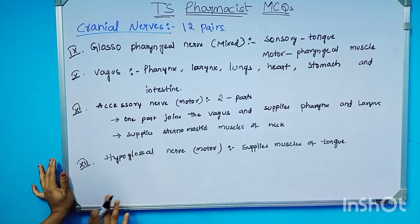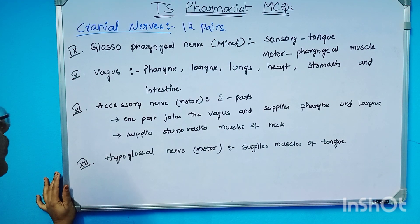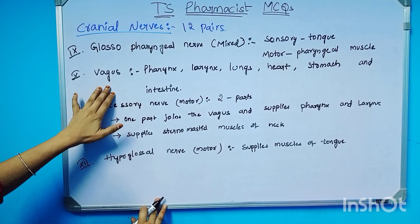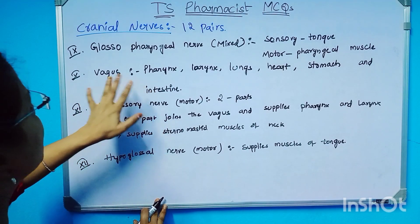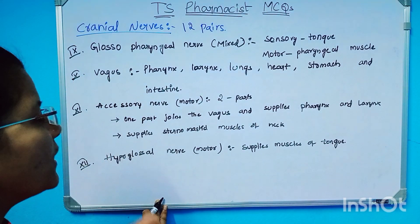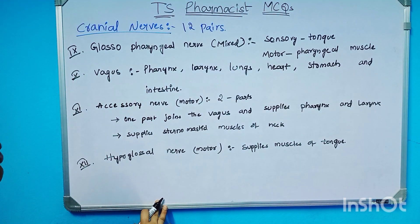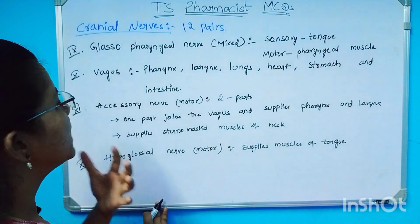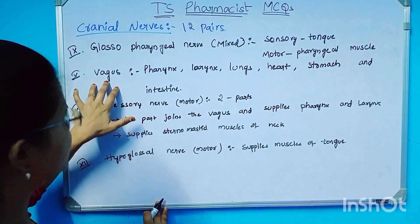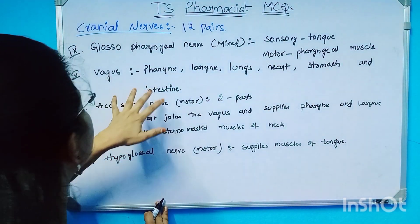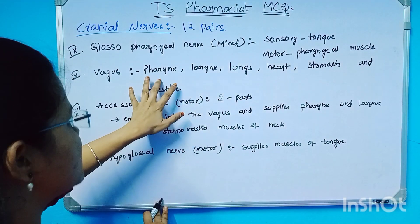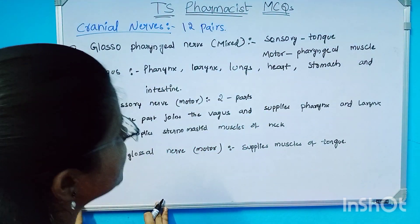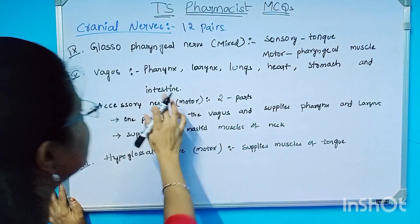The tenth cranial nerve is very important in our body. That is the vagus nerve. The vagus nerve is very important, supplying the lungs, heart, stomach, and digestion.